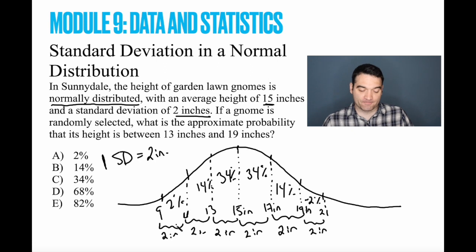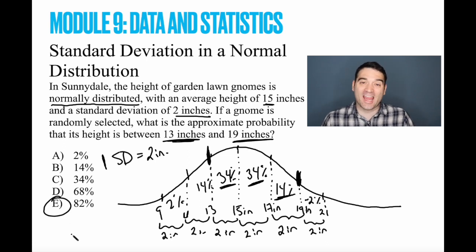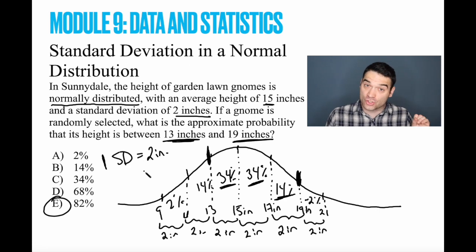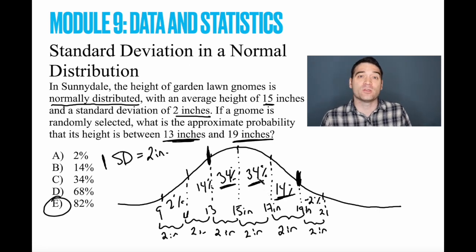And the question is, what's the probability, if I select a gnome from this distribution, right? Remember, this distribution accounts for 100% of the people in this curve right here. What's the probability that if I select a gnome at random, its height is going to be between 13 and 19? Well, there's 13 inches right there. And there's 19 inches right there. So all we have to do is add up the percents. 34, 34, 68, plus 14 gives us 82%. I realize this is not super intuitive. And I'm not really going into the weeds about normal distribution and standard deviation. But take it from me that these problems are very, very formulaic. And if you just know this distribution, if you know this graph and the associated numbers, you will be fine.